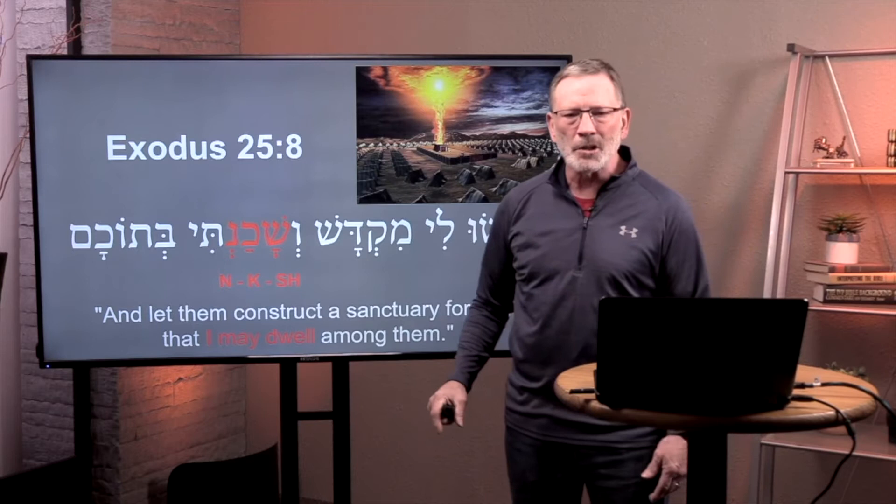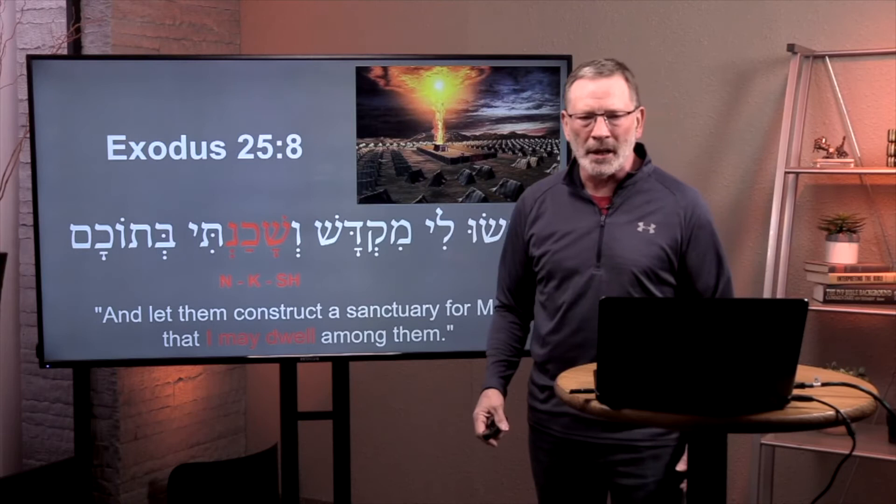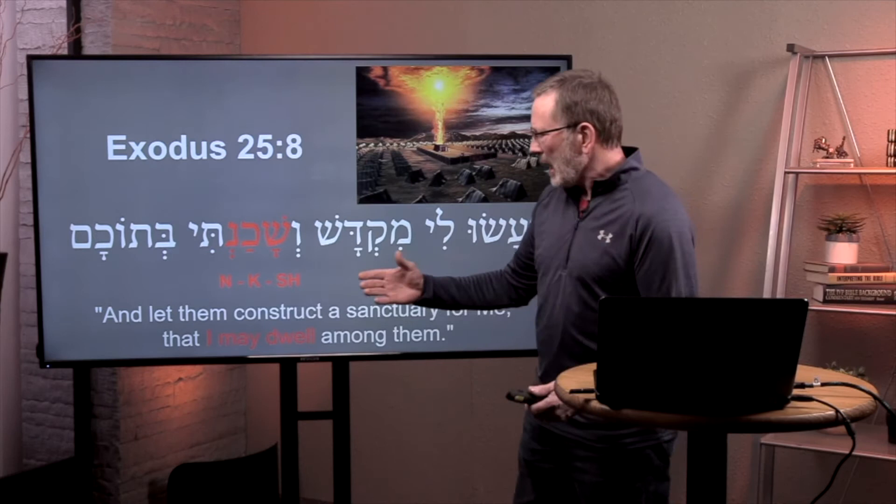That's where John is getting this word 'schuno.' There is no S-H sound in Greek, so you have to take the H sound off, and you get S-H-K-N. That's where we get the word 'shekinah,' or in Hebrew, 'shekinah.' So John is taking an Old Testament or Hebrew Bible word and turning it into a loan word in Greek.